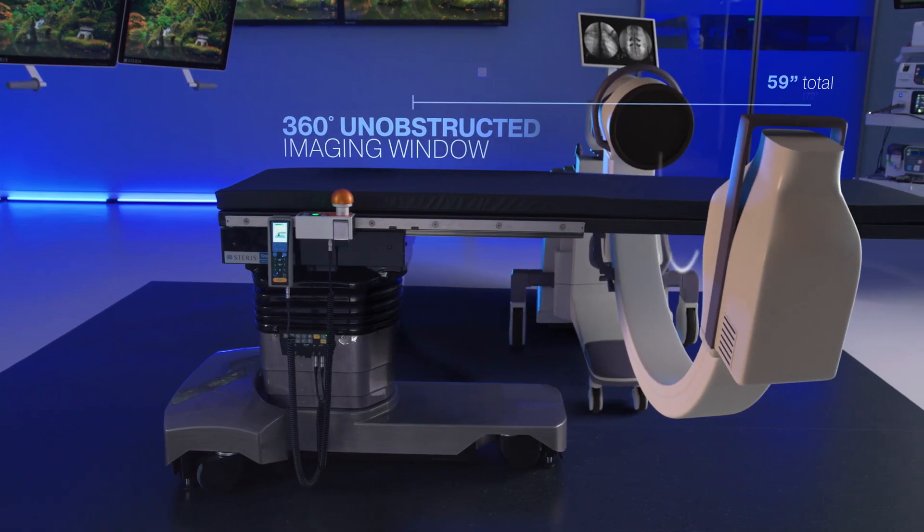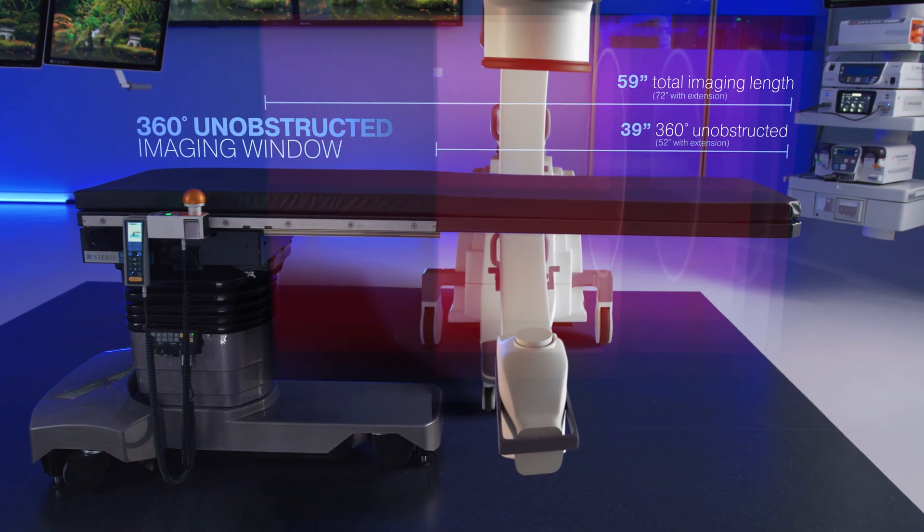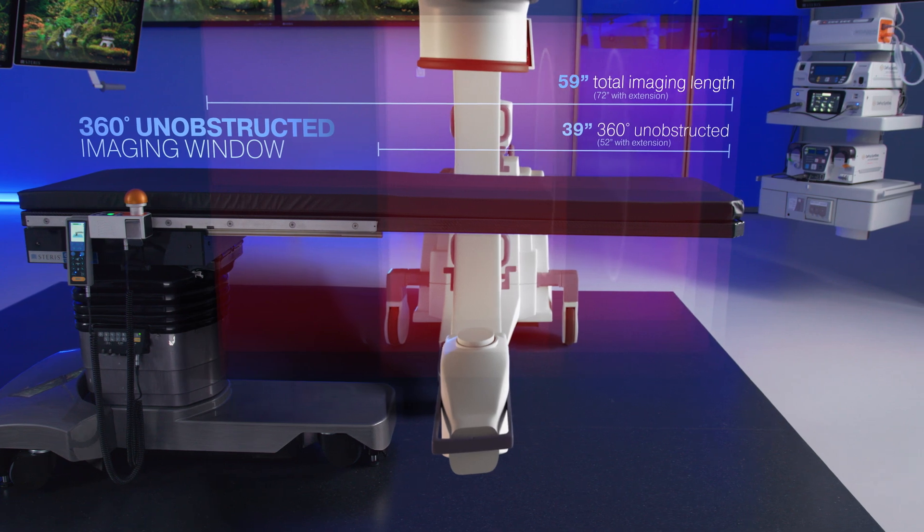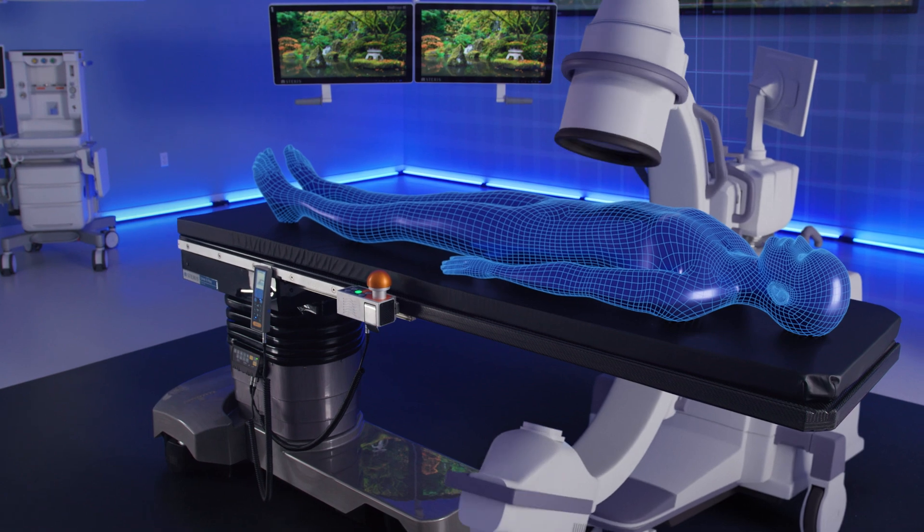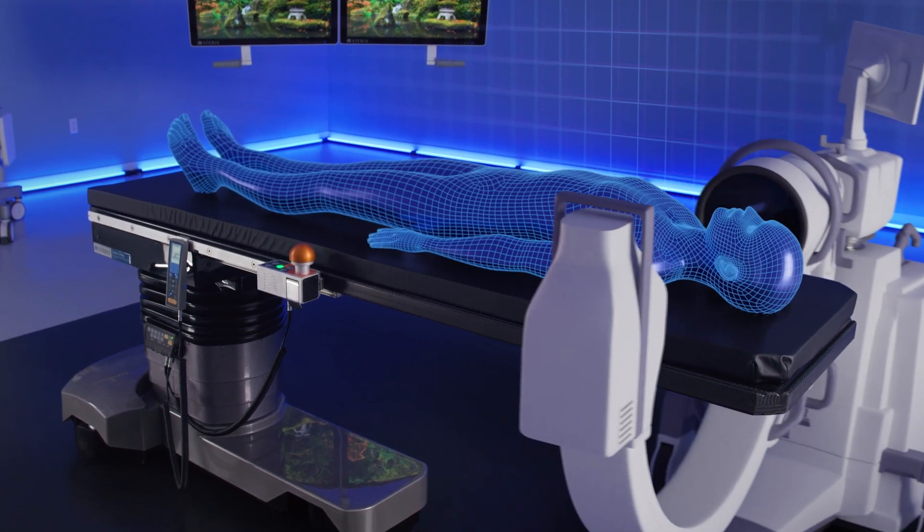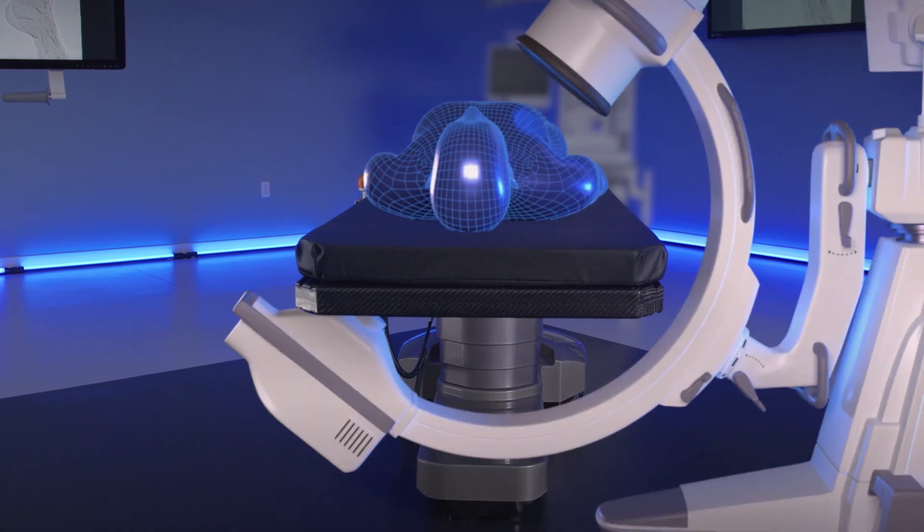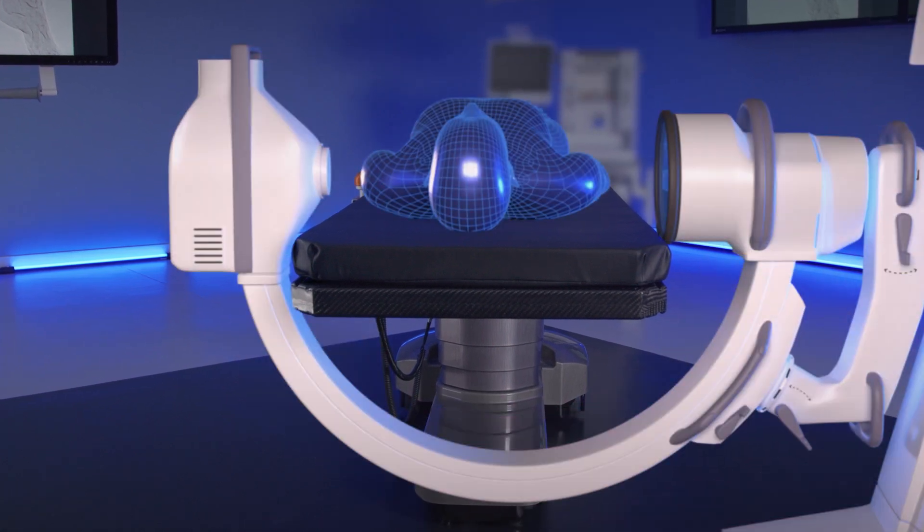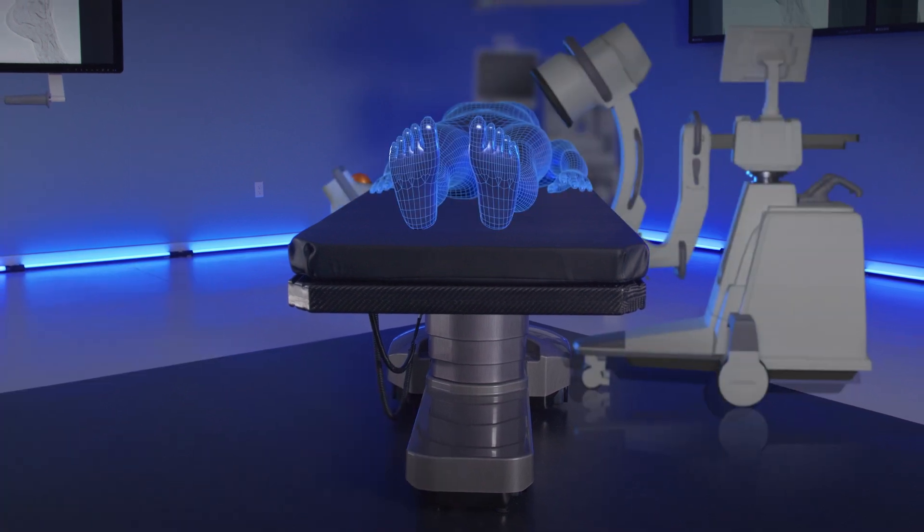CMAX X-ray offers a large unobstructed 360-degree imaging window. Full-body human anatomy exposure is capable whether moving the floating tabletop or the C-arm. Easily capture anterior-posterior, oblique, and lateral C-arm fluoroscopy in the fully unobstructed metal-free end of the CMAX X-ray's tabletop.